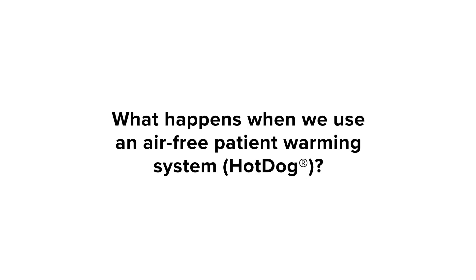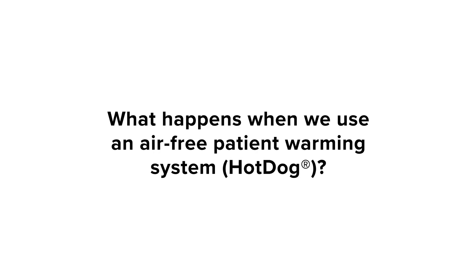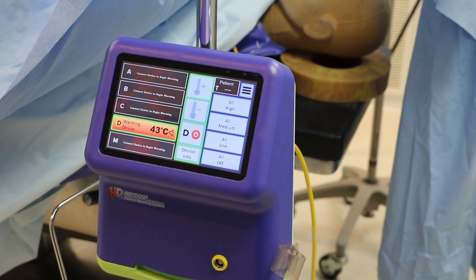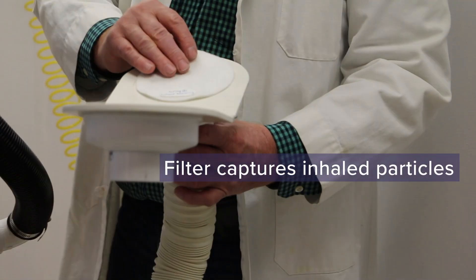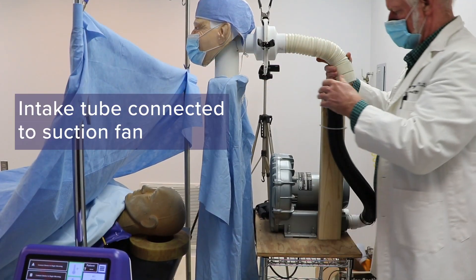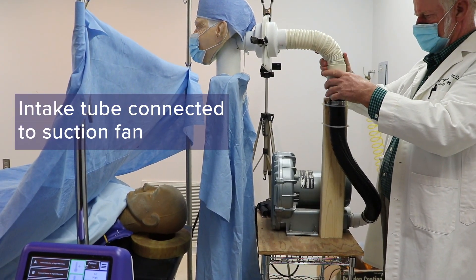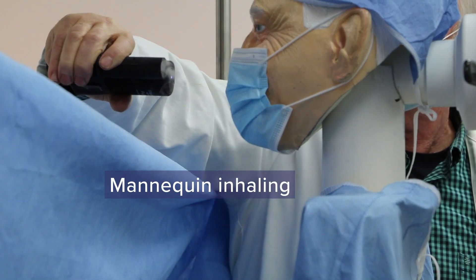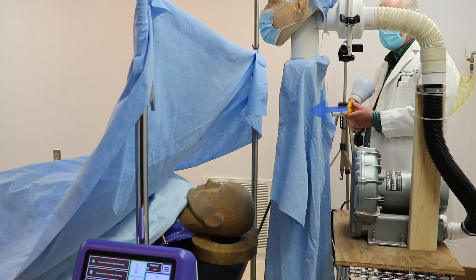What happens when we use an air-free patient warming system? The hot dog conductive fabric blanket is warming the upper body on high setting. A new filter is placed over the airflow path to capture inhaled particles. The intake tube connects the anesthesia provider to the suction fan. Again, the laminar flow system is effective and the inhalation simulator is operating.